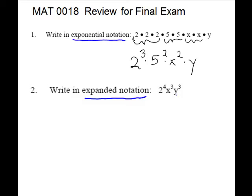So 2 to the 4th is going to be 4 copies of the 2. x cubed will be 3 copies of the x. And y cubed will be 3 copies of the y. And that is expanded notation.